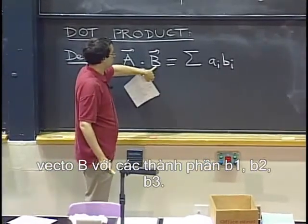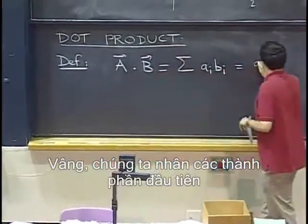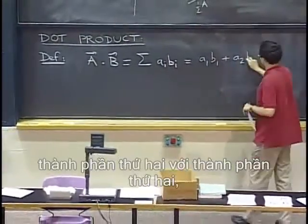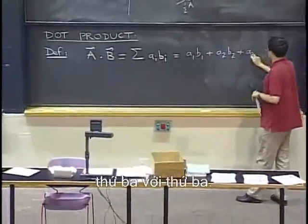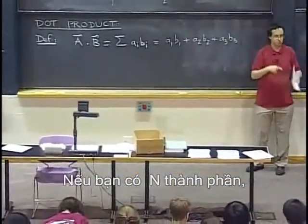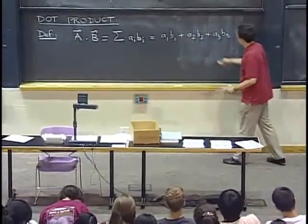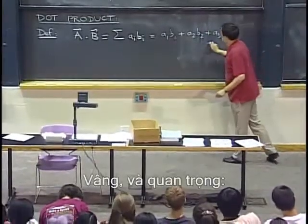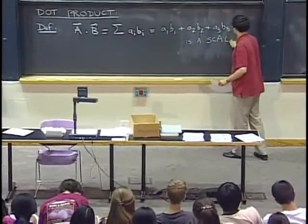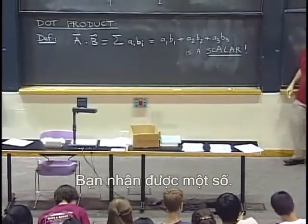and a vector b with components b1, b2, b3. Well, we multiply the first component by the first component, the second by the second, the third by the third. If you have n components, you keep going and you sum all of these together. And importantly, this is a scalar — you do not get a vector, you get a number.